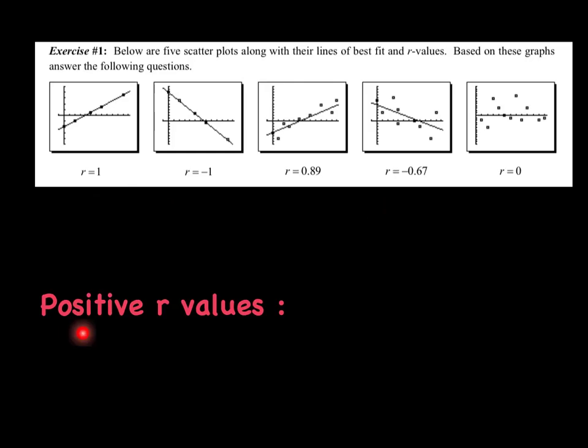So you'll notice I have positive R values here, and I would say I have two positive R values. One R equals 1, and this one of R equals 0.89. What do you notice about these graphs? Can you even see what direction they're kind of moving in? I would say that the points are moving in an upward direction compared to this one where it's moving in a downward direction. Okay, so I would say the points are on the upward.